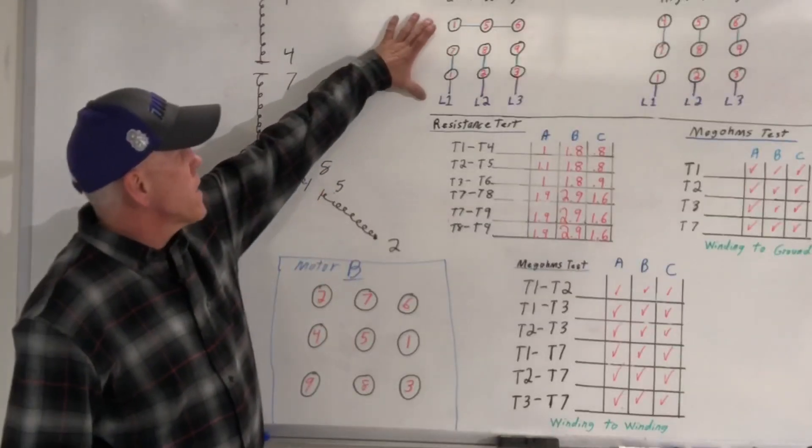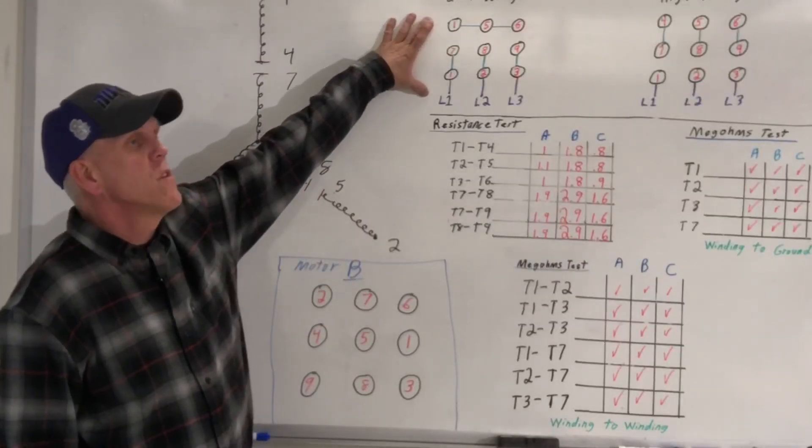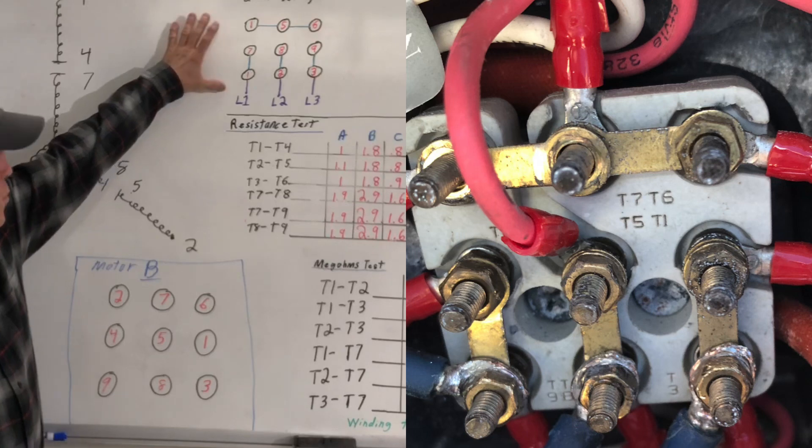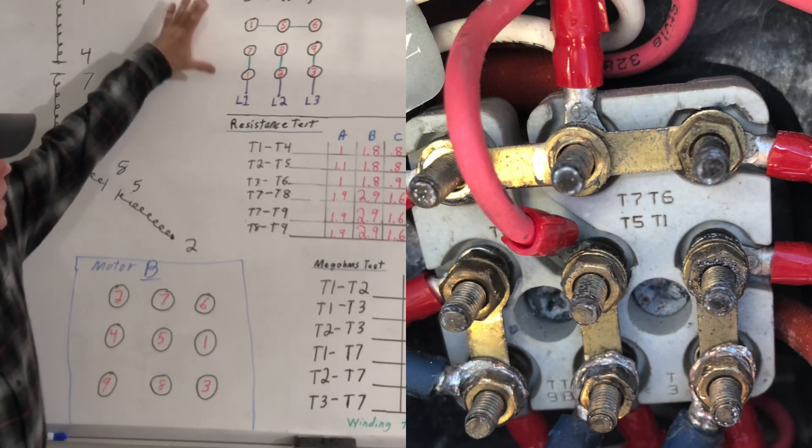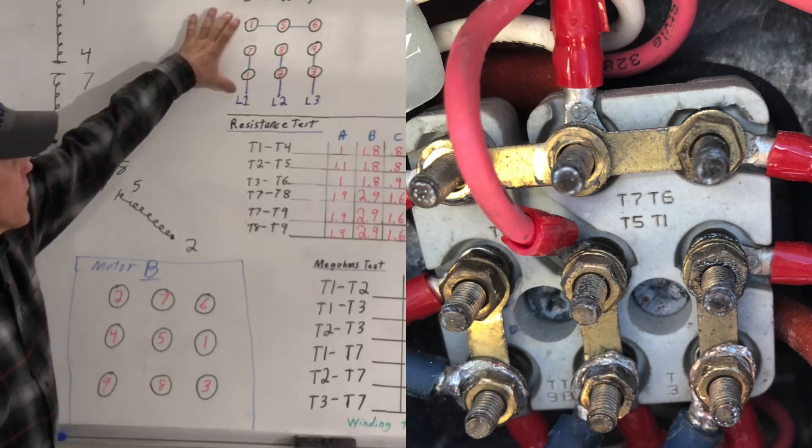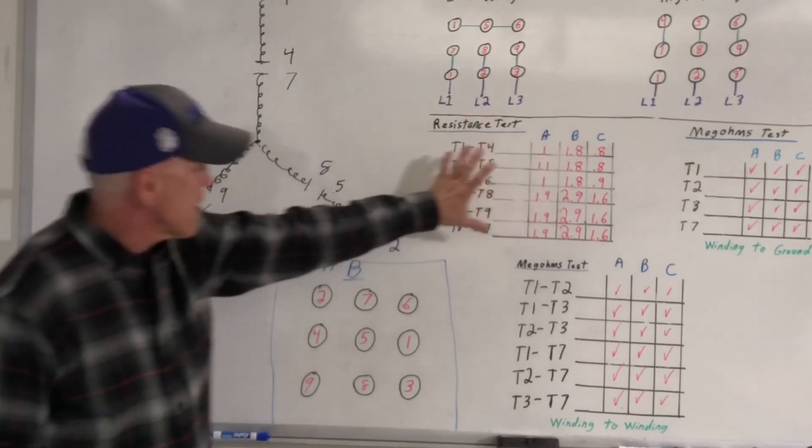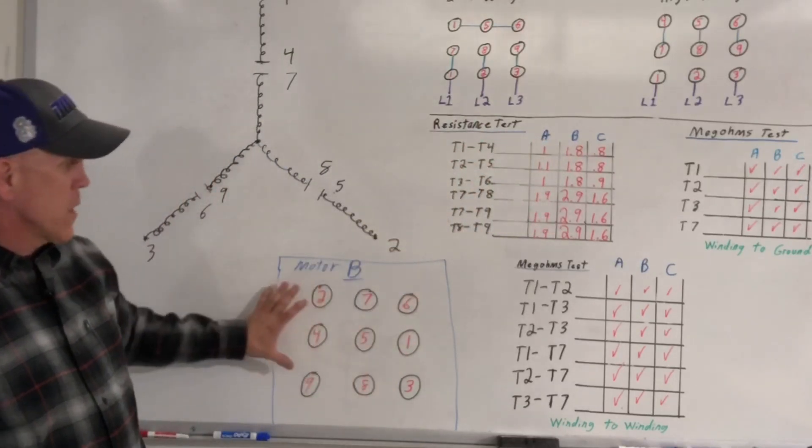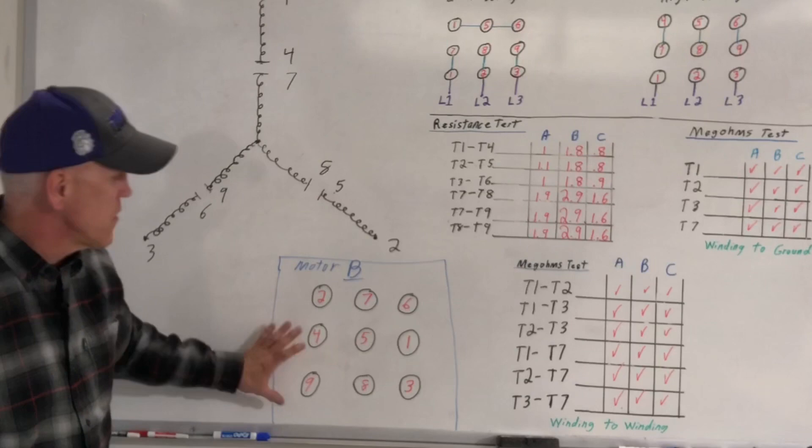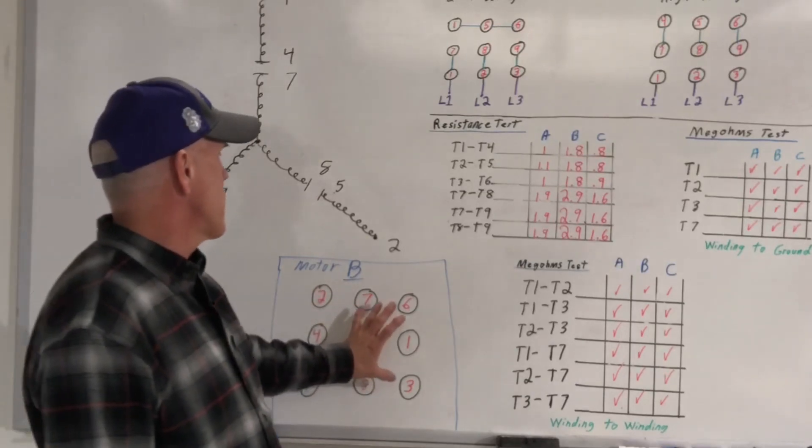But it was wired in this configuration. The low voltage configuration was how it was wired. So I went ahead and I used this configuration to get these readings. Because the wiring on it all looked the same as the other motors. It's just that it's all connected to different terminals.